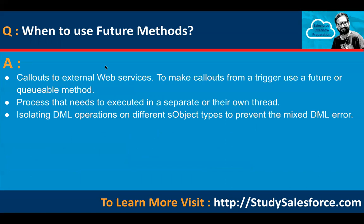When to use future methods: for callouts to external web services — to make callouts from a trigger, use a future or queueable method. Also for processes that need to execute in a separate thread, and for isolating DML operations on different sObject types to prevent mixed DML operation errors.